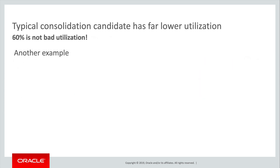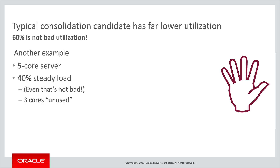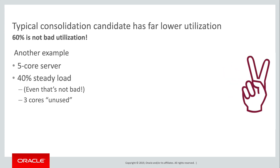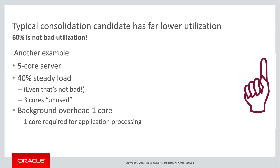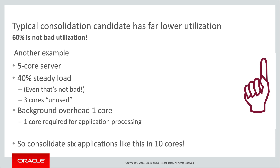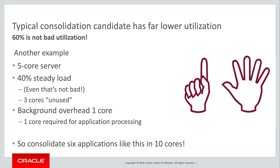What if we start with a server that's only 40% utilized? Even that's not too bad. 40% utilization means we're only using two fingers, or cores. Again, we take away the finger for the background overhead, meaning that only one core is required for application processing. Using the same logic, therefore, we should be able to consolidate six applications like this in a ten-core server.